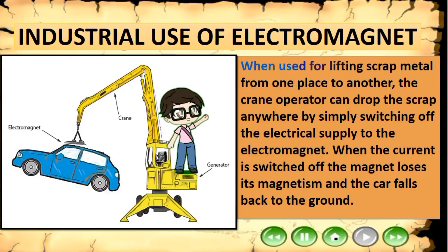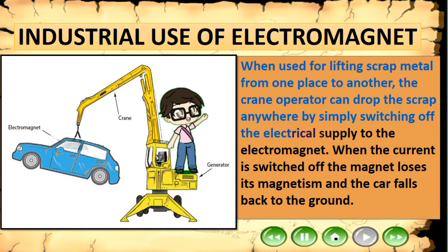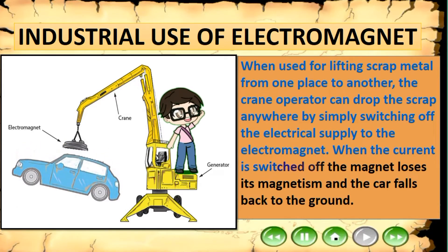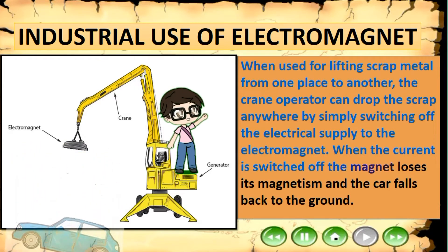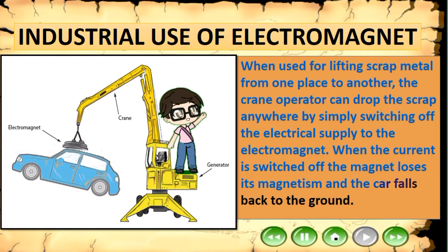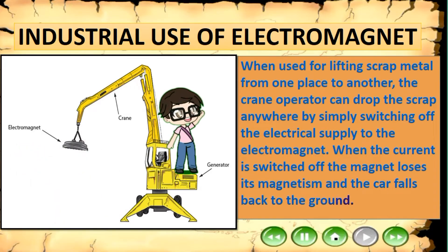When used for lifting scrap metal from one place to another, the crane operator can drop the scrap anywhere by simply switching off the electrical supply to the electromagnet. When the current is switched off, the magnet loses its magnetism and the metal falls back to the ground.